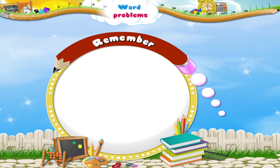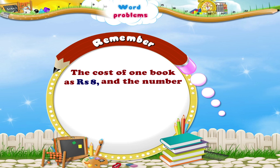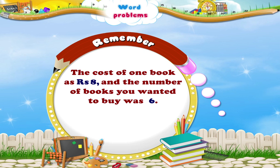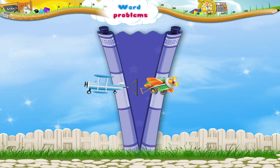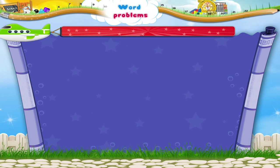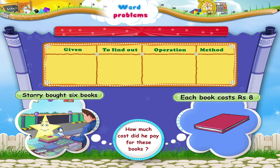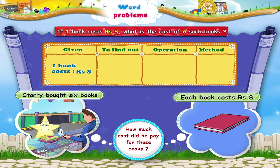Remember, you were given the cost of one book as rupees 8, and the number of books you wanted to buy were 6. You had to find the cost of 6 books. The word problem is: if one book costs rupees 8, what is the cost of 6 such books? Since we have to find out the total cost of the books, we will use multiplication.